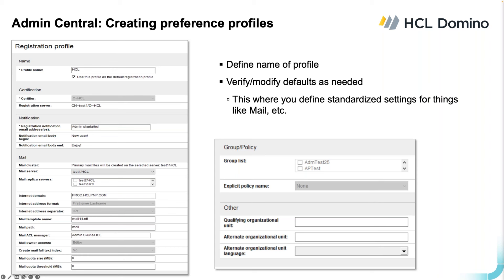In the mail section, you'll find similar settings to what's used in the admin client registration profile. One difference: for mail cluster you can specify a cluster and we'll randomly select two servers in that cluster to make replicas. If you don't want that, you can specify a specific mail server and choose other mail servers yourself. You can also add a group or a specific policy. Alternate language information will be discussed in the next slide.